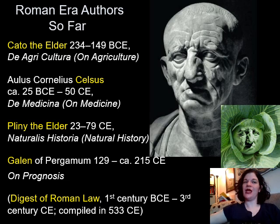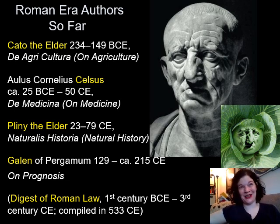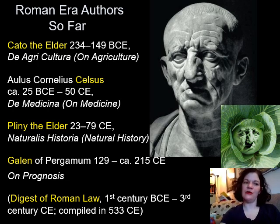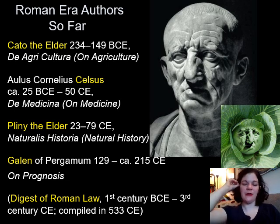In 79 CE, Vesuvius blew its top. Pliny went to the window, saw the eruption in progress, and started making plans to check it out from a closer angle. He asked his nephew if he wanted to come, and Pliny the Younger said he'd love to, but he had homework to do — bless his heart. About this time, Pliny started getting messages from panicked citizens along the coast of the Bay of Naples begging for rescue, and his scientific mission turned into a rescue mission. He called up the ships at Misenum, including his flagship, and quickly organized a party to sail across the Bay of Naples to Stabiae, the closest port to Pompeii and Herculaneum.